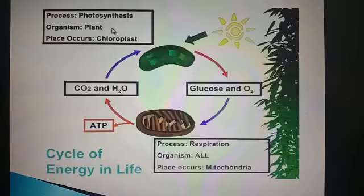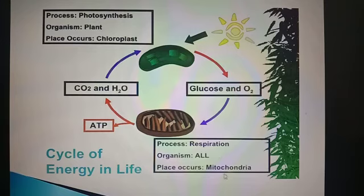So, in the process of photosynthesis that occurs in plants in the chloroplast, it takes carbon dioxide and water to form glucose and oxygen in the presence of sunlight. The glucose and oxygen are then used for respiration that occurs in all organisms in the mitochondria. It gives off carbon dioxide and water, and the main product is energy, i.e. ATP. This is the cycle of energy in life.